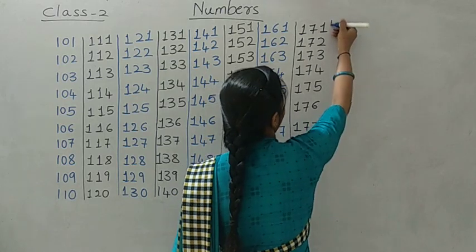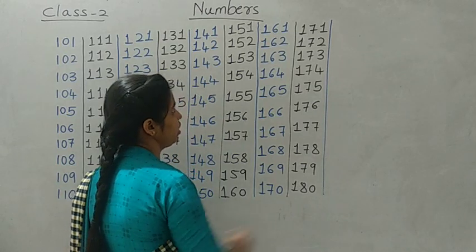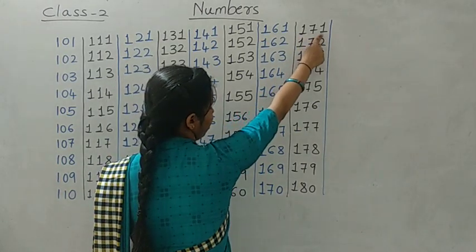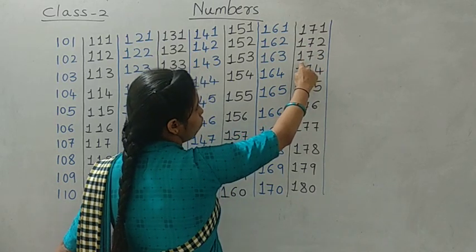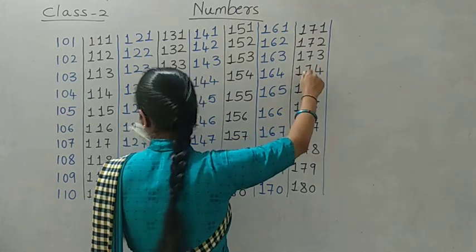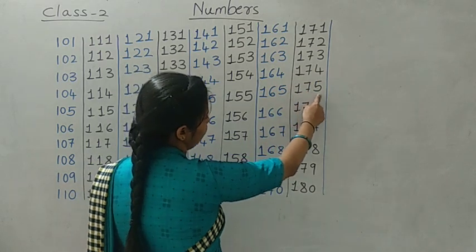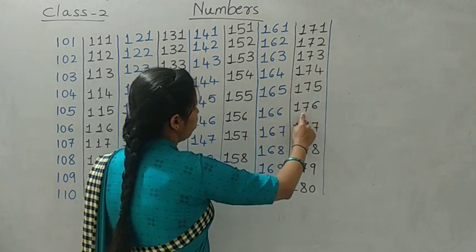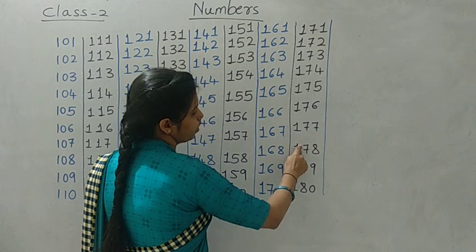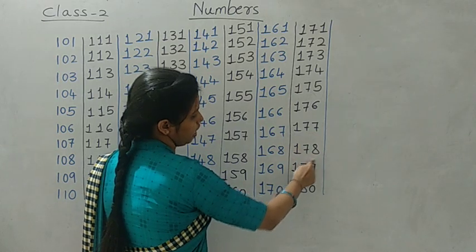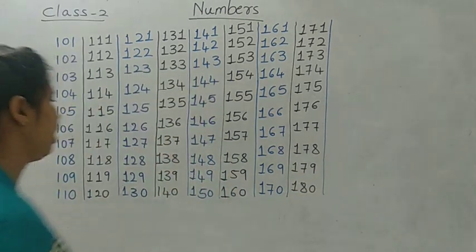Okay, take a scale and draw a proper straight line. See again: 171, 172, 173, 174, 175, 176, 177, 178, 179.